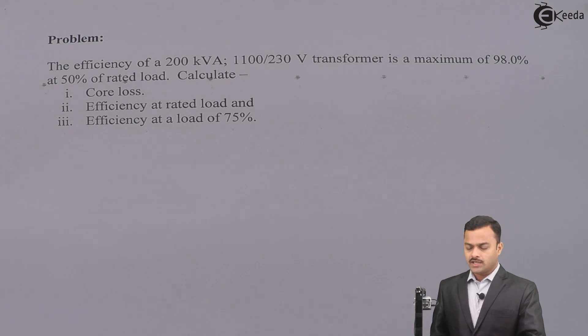So here is the problem. The efficiency of 200 kVA 1100/230 volt transformer is a maximum of 98% at 50% of the rated load. Calculate core loss, efficiency at rated load and efficiency at a load of 75%. So let's solve it.